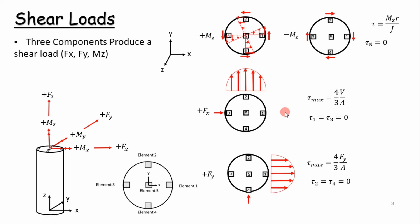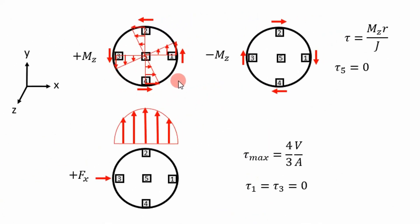The next thing you want to do is draw out or identify your stress distributions. We're looking at our shear loads, which consist of our force load in the X direction, force load in the Y direction, and our moment in the Z direction. If we look at our moment in the Z direction, which is producing torque around the shaft, we can identify the stress flow as shown here. Our worst case stresses occur at elements one, two, three, and four, and they act counterclockwise when it's a positive moment in the Z direction, as indicated by the right-hand rule.